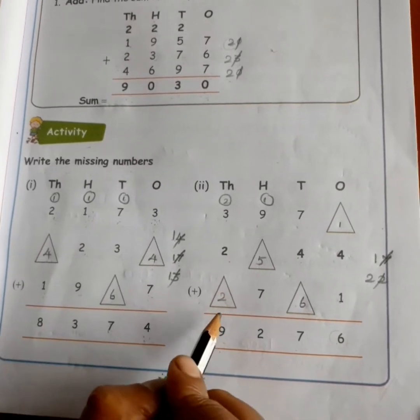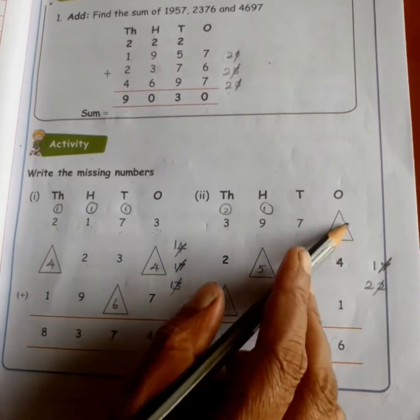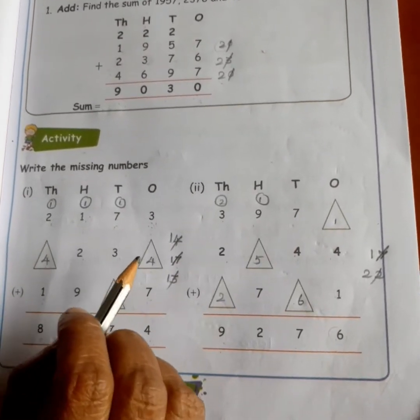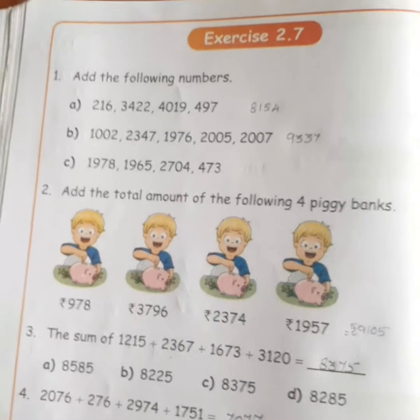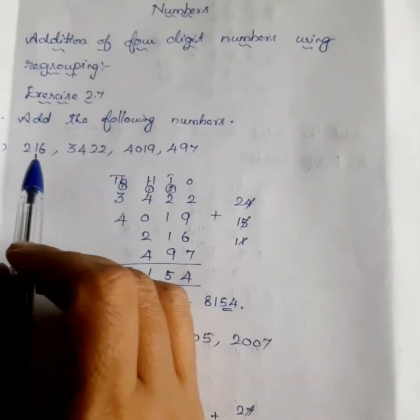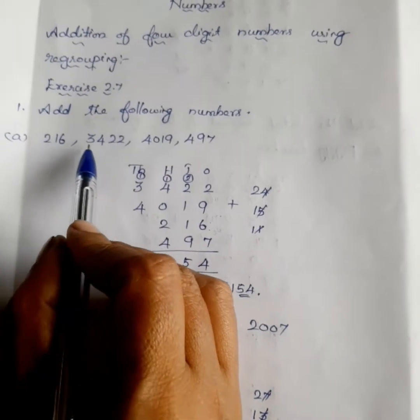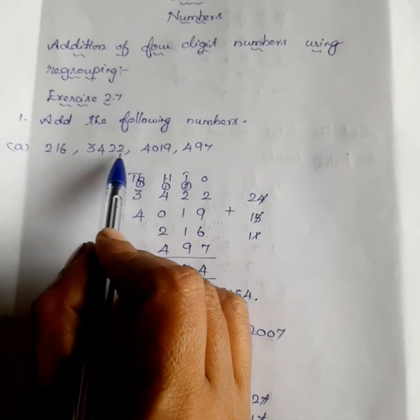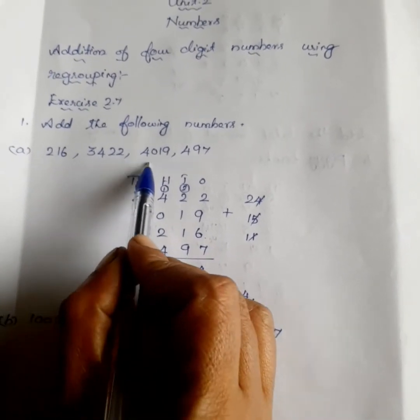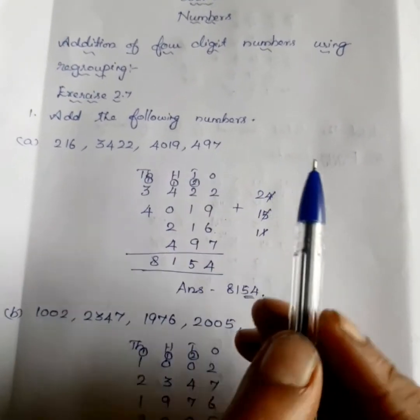Missing numbers: 2, 5, 6, 1. Exercise 2: Add the following numbers: 216, 3,422, 4,097.